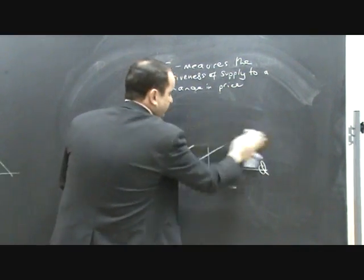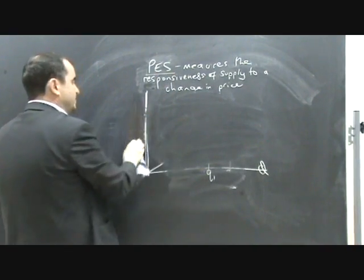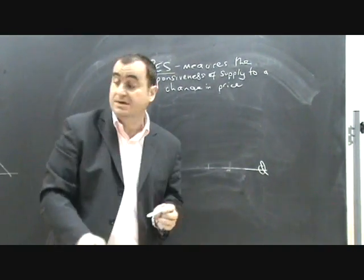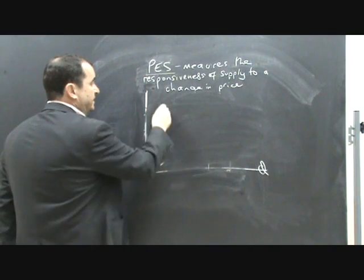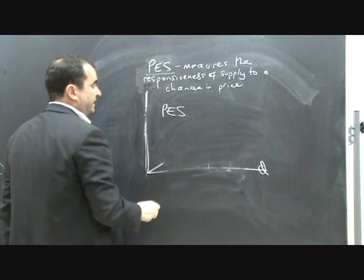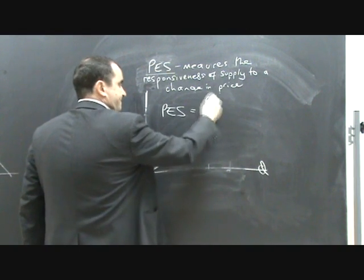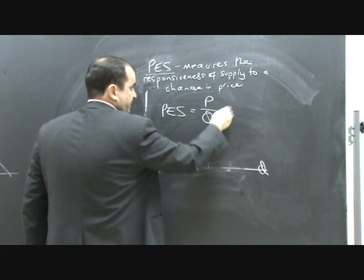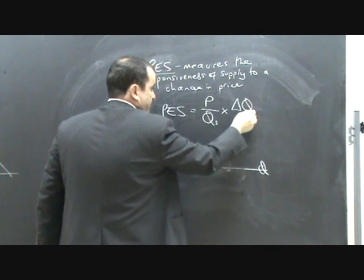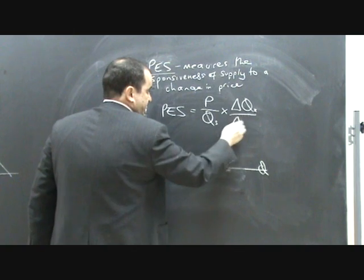But you should also know, of course, the equations. The equations for calculating the value of price elasticity of supply. And there are two equations that you must learn. Price elasticity of supply is P over Q, quantity supplied, times change in Q over change in P.